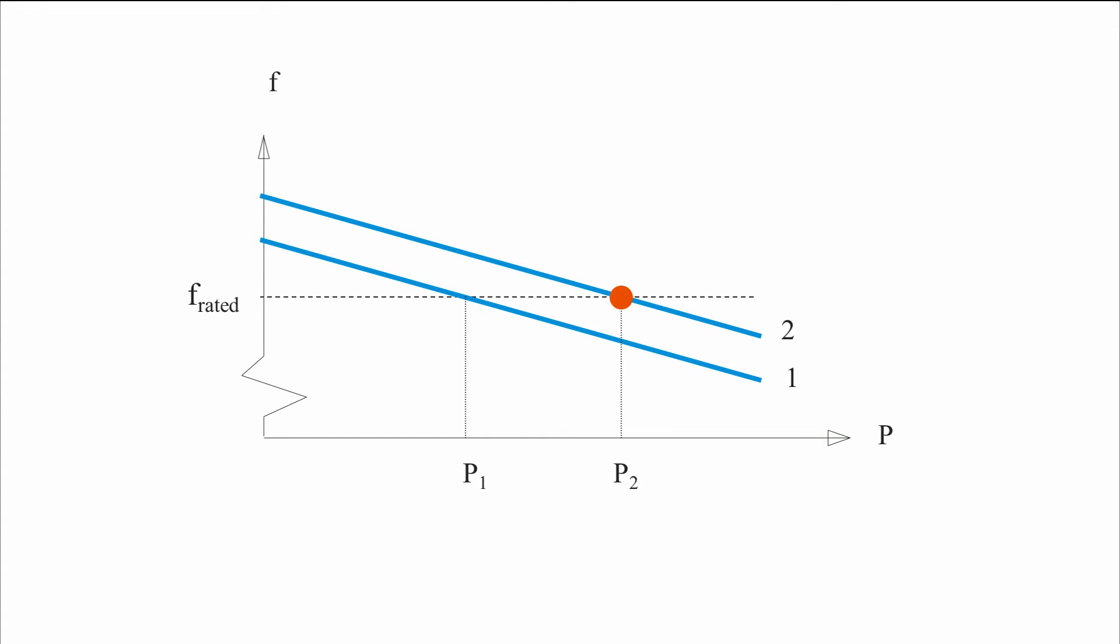Secondary control brings back the system to the original frequency by increasing temporarily the prime mover. This raises the kinetic energy, and therefore the frequency. It also allows to bring the tie-line exchange of power back to the one that was agreed between the areas. An area can be a country, for example.